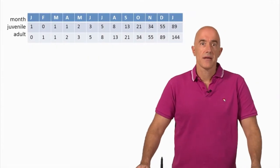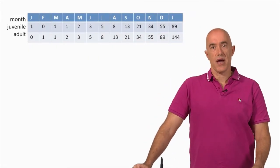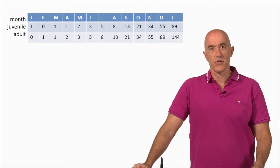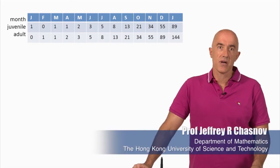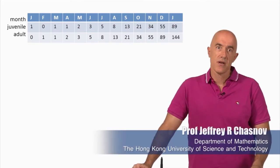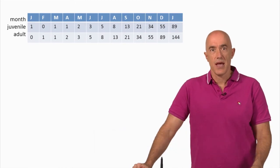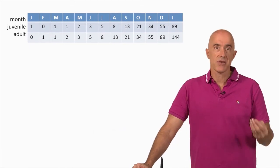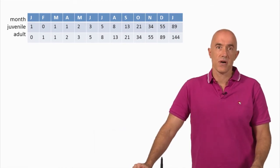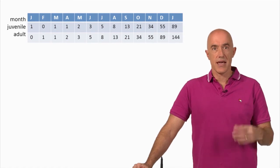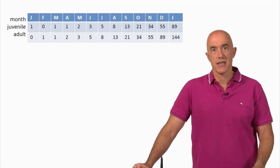Welcome back. In today's lecture, I want to introduce an important mathematical construct called the Fibonacci Q matrix. The Fibonacci Q matrix will be useful to us in deriving an identity called Cassini's identity.